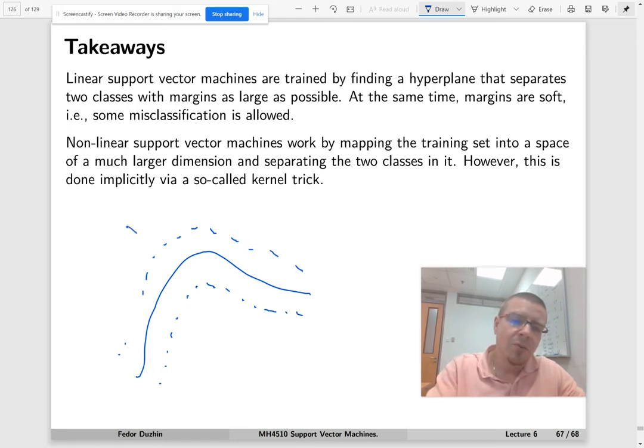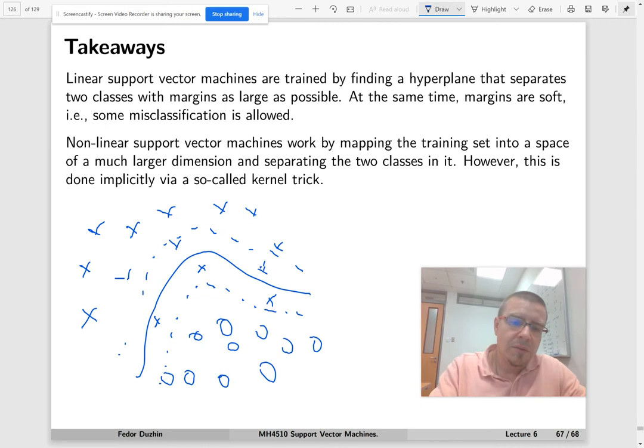On one side we have one class of the decision boundary, and probably some observations are misclassified, which means they are going to be on the wrong side of the decision boundary but still within the margins. This is my other class, so almost everything sits here, but maybe some observations are going to be misclassified.